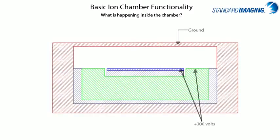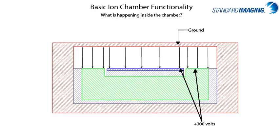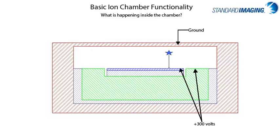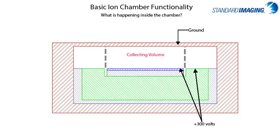Similar to thimble chambers, charge collection of ionizations in air-filled parallel plate chambers relies on the guard to define the collecting volume. A well-guarded parallel plate chamber typically uses the rule of thumb that the guard thickness should be at least two times the size of the gap between the collector and the guard.